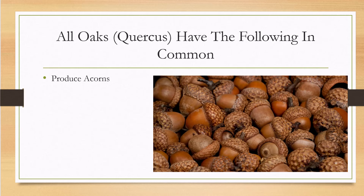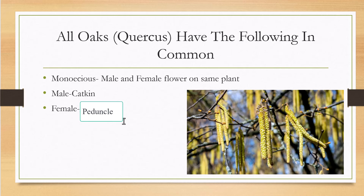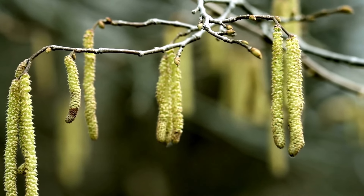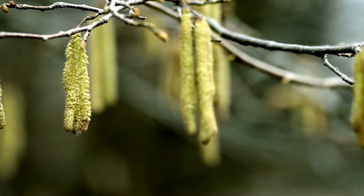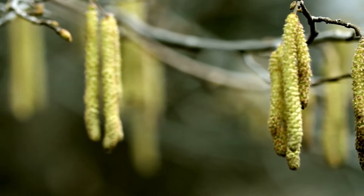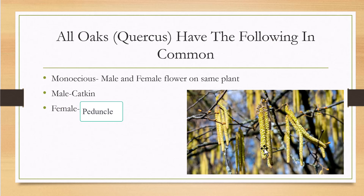All oak trees produce the same fruit — technically an acorn is a fruit. All oaks have monoecious flowering, meaning male and female flowers are on the same plant but in separate flowers. The distinct male flowers are called catkins. If you've ever cleaned gutters in springtime and found long, cigar-looking things by the thousands, those are from catkins. Many trees have catkins — oaks, pecan trees, river birches.